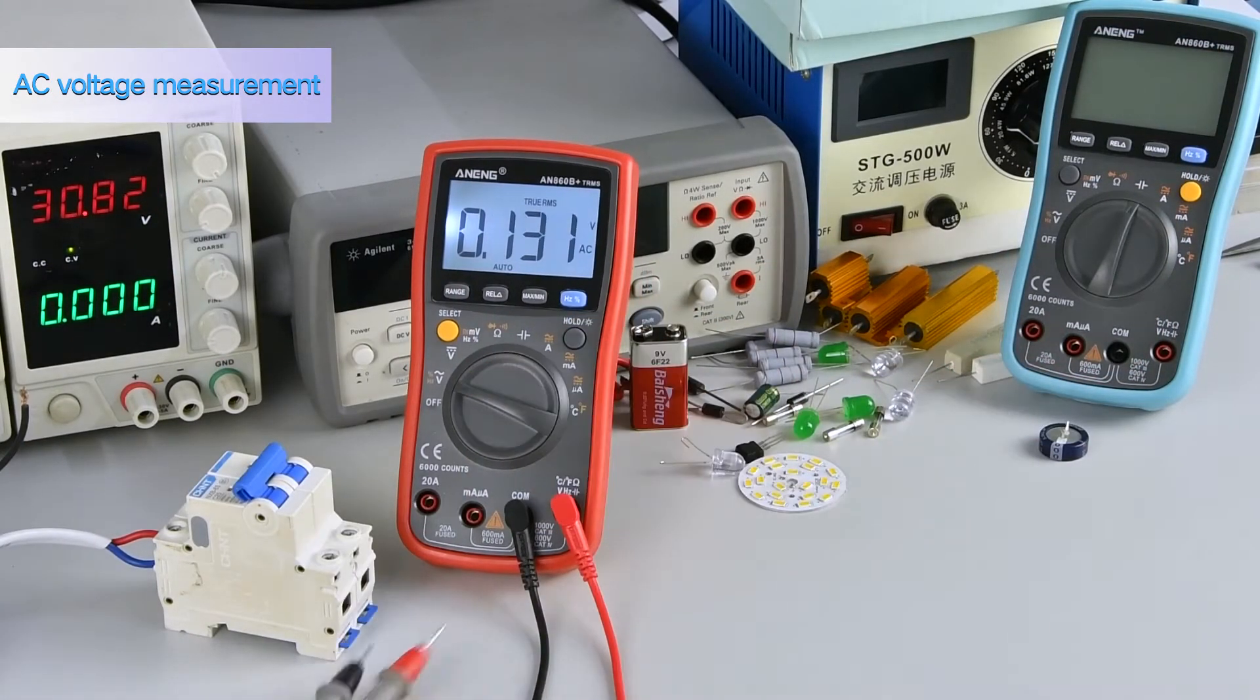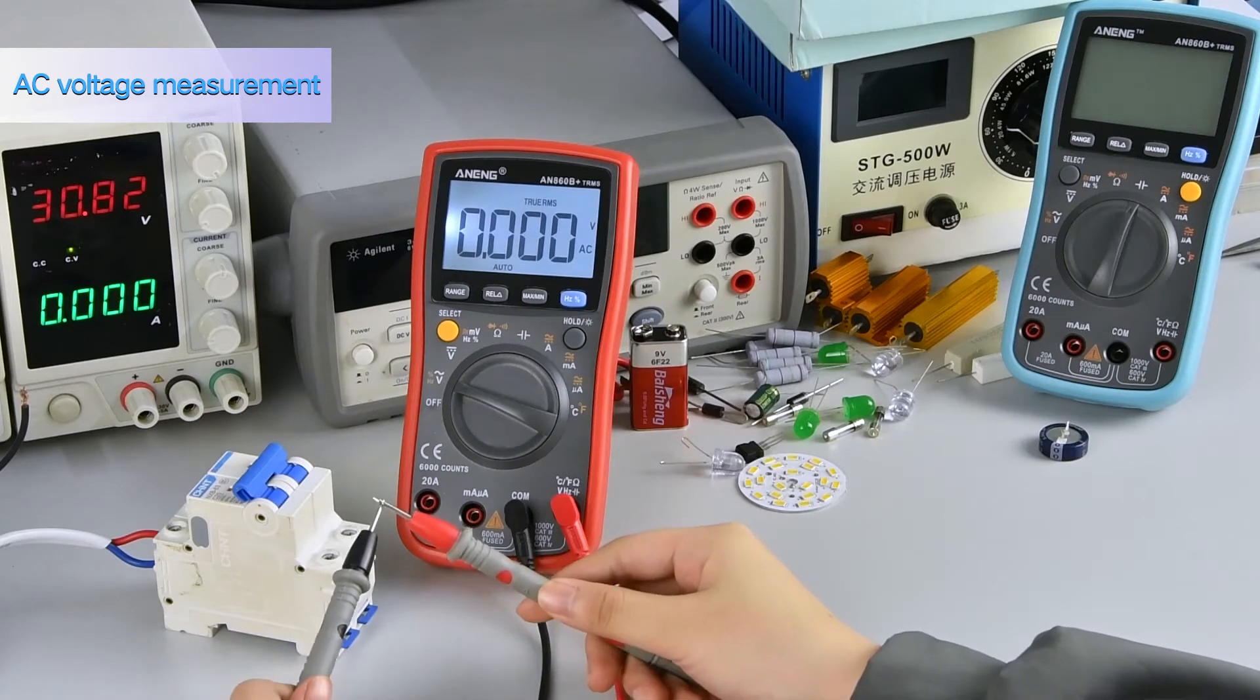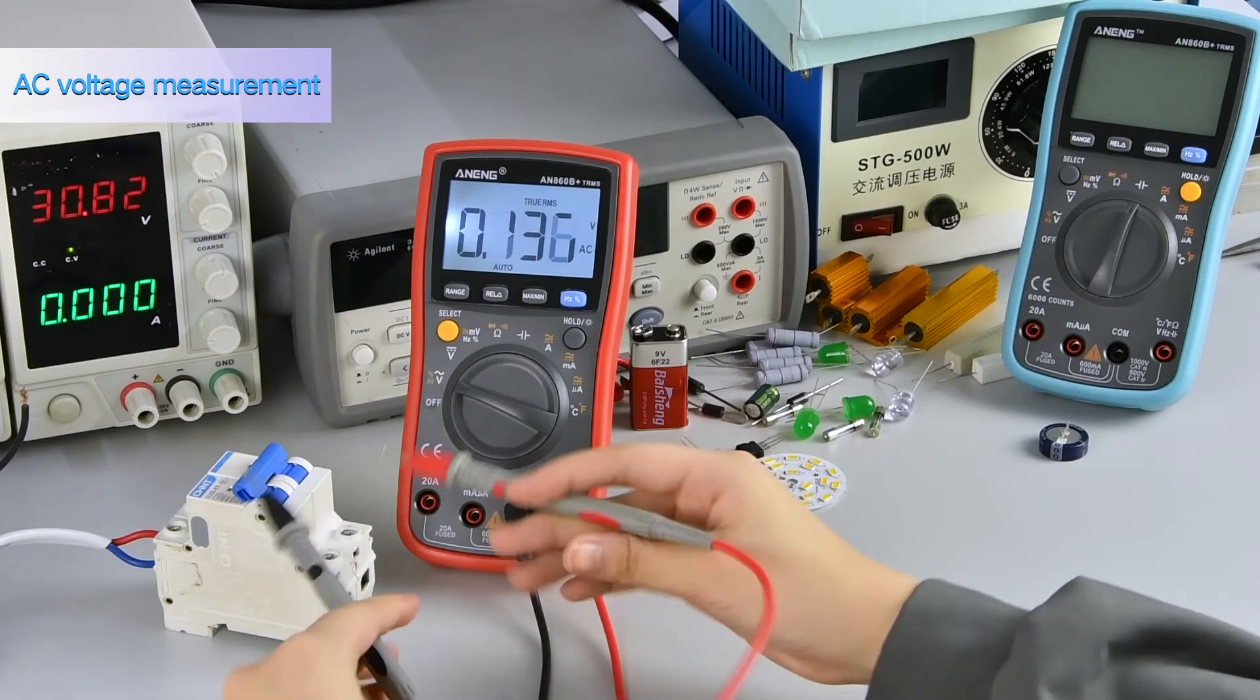AC voltage measurement: when measuring, insert the measuring pen into the hole to measure.